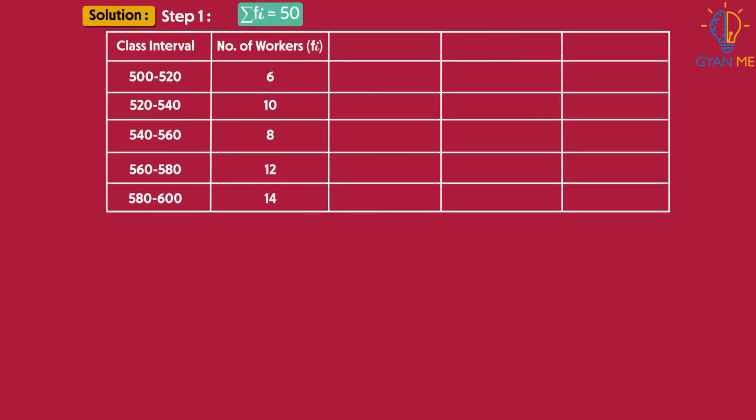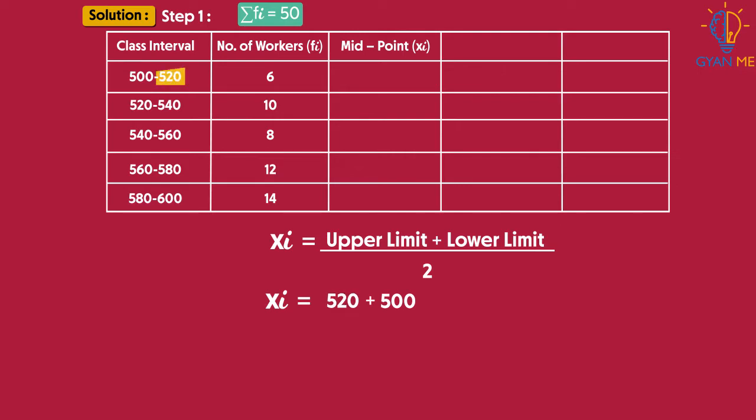The first step is to calculate xi, that is, the midpoint or class mark of each class in the table. Recall that we can calculate xi for each class using the formula: upper limit plus lower limit divided by 2. So for the first class, lower limit is 500 and upper limit is 520. Add both of them and divide by 2. We get 510.